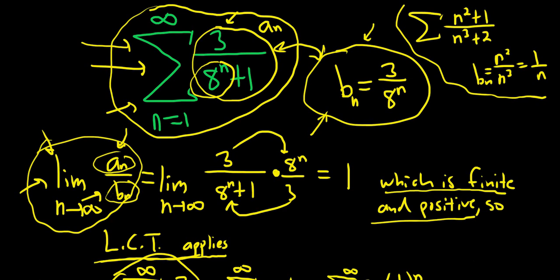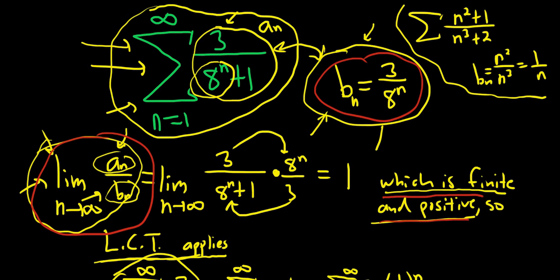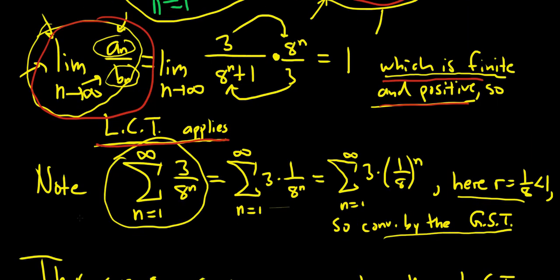The big downside with limit comparison in my view is all the writing you have to do to explain what's going on. You have to first come up with your b sub n, then take your limit, say it's finite and positive so LCT applies, then look at the sum of the b's and figure out what's going on. If it converges, the answer is converges by LCT; if it diverges, the answer is diverges by LCT.